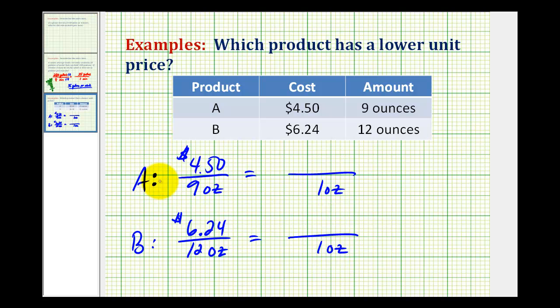So to determine the unit rate for brand A, we'll have to divide both the denominator and the numerator by 9. Notice 9 divided by 9 is equal to 1. And for brand B, we'll have to divide both the denominator and the numerator by 12 to determine the unit rate. And we'll go ahead and do this using the calculator.